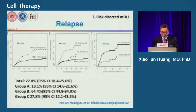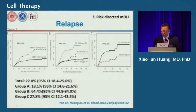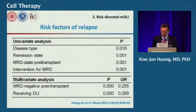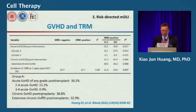Results published in Blood show that donor lymphocyte infusion significantly decreased relapse compared to the interleukin-2 group, although no significant difference was seen versus the MRD-negative group. Multivariate analysis confirmed that MRD negativity and receipt of donor lymphocyte infusion were both associated with lower relapse rates, validating MRD as a good biomarker for risk stratification and confirming that DLI can decrease relapse after haploidentical transplantation.